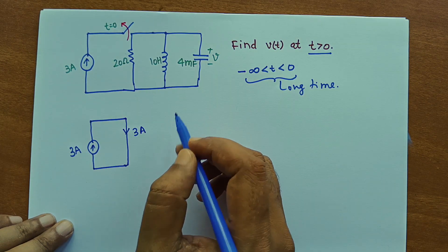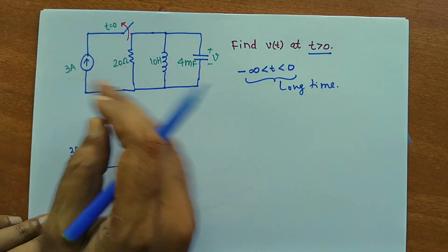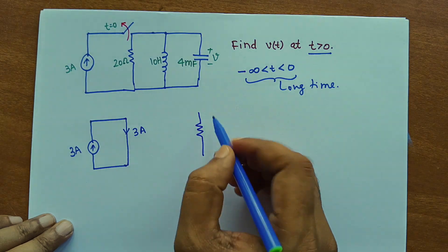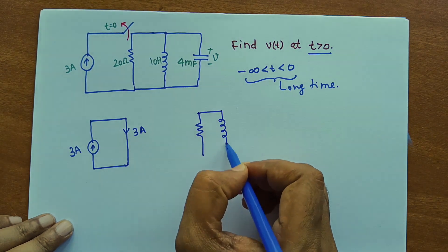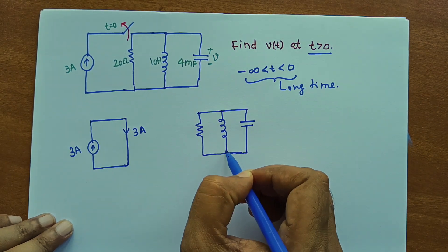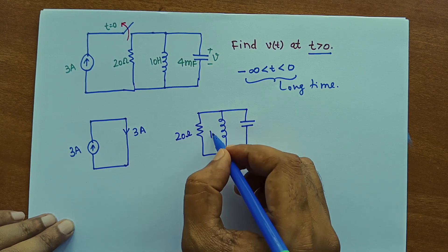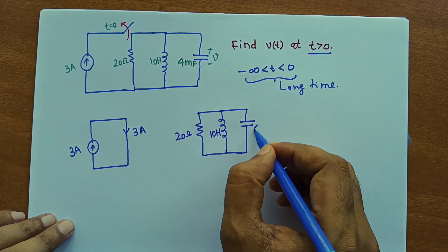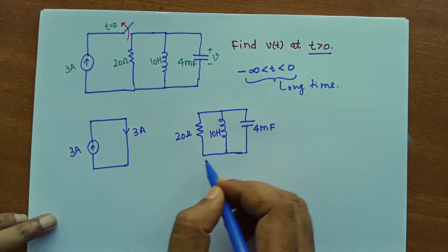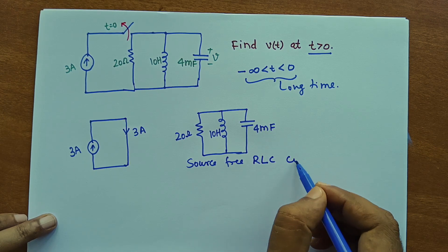As soon as this switch is off, this portion will be removed and we will have only this circuit, which is R, L, and C in parallel. The values are 20 ohms, 10 Henry, and 4 millifarad. This is called a source-free RLC circuit.